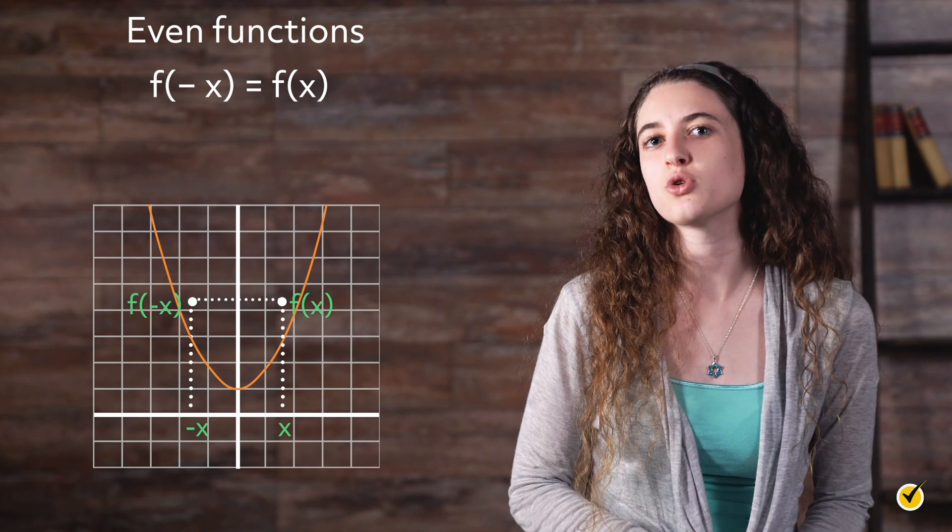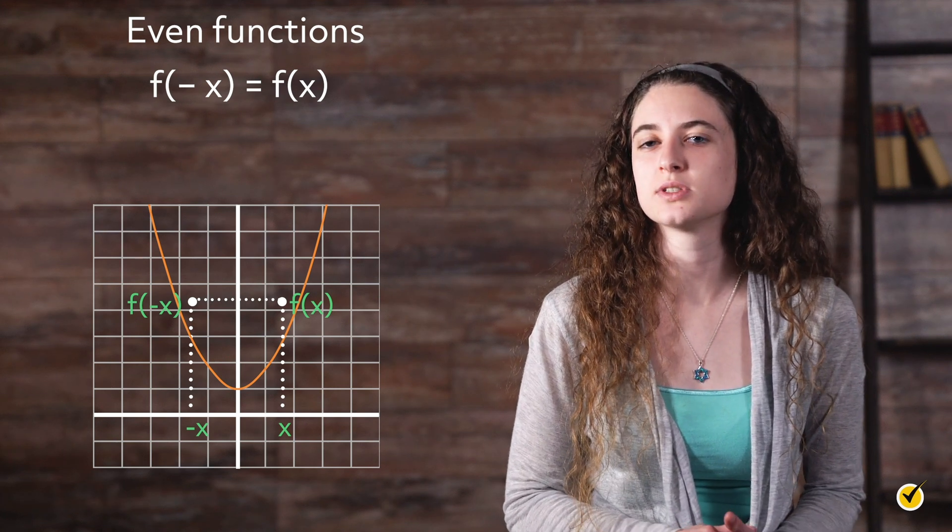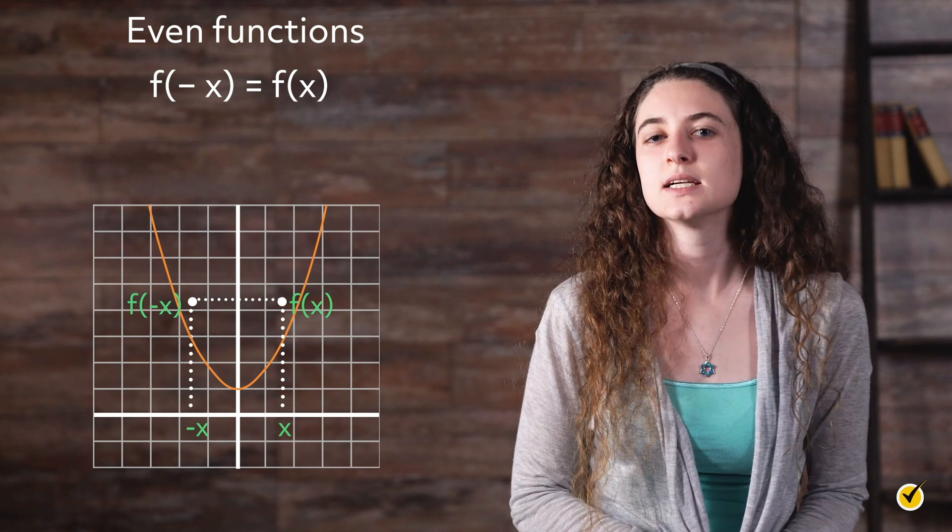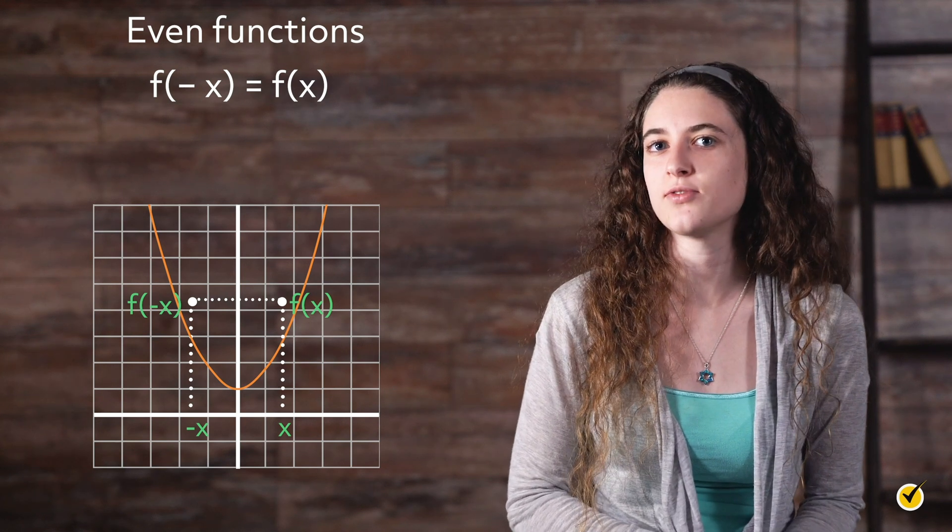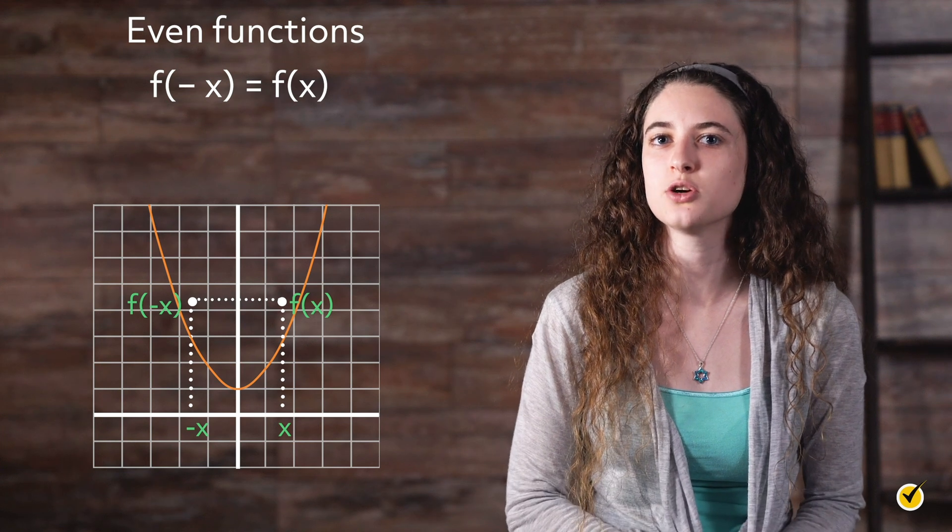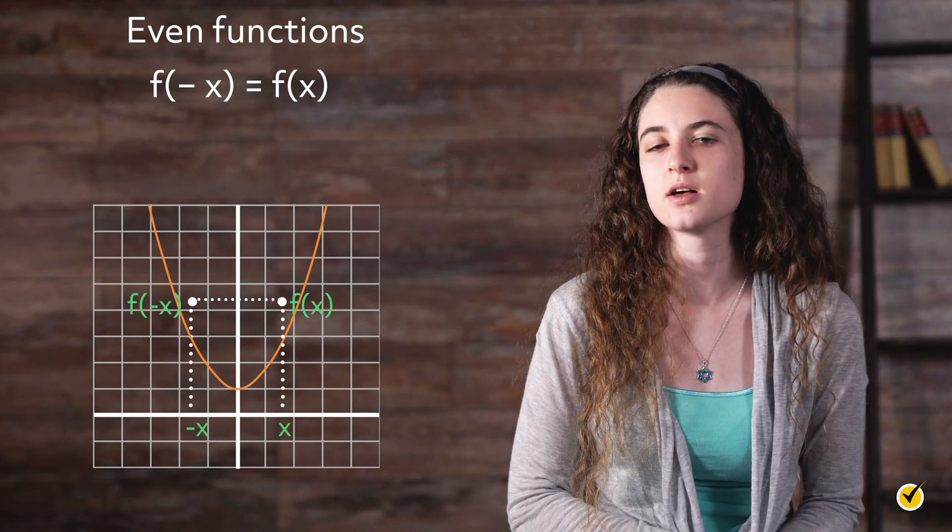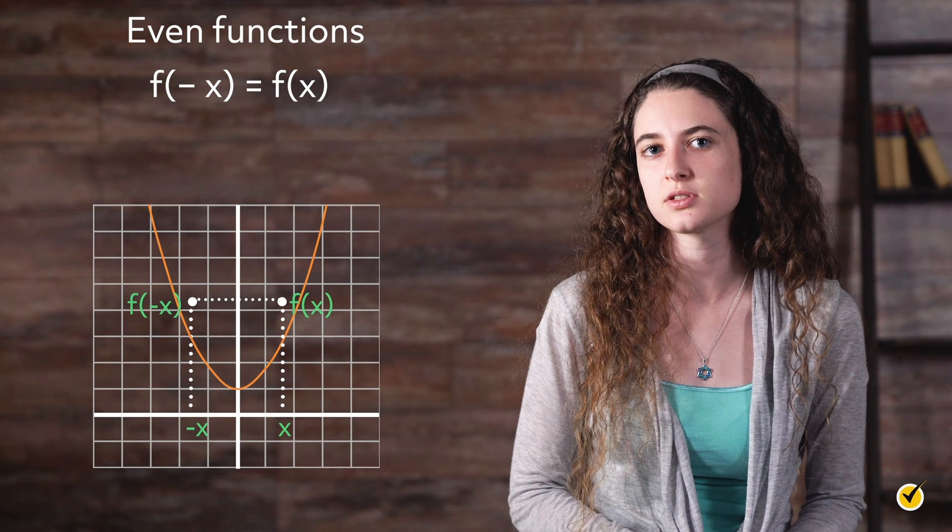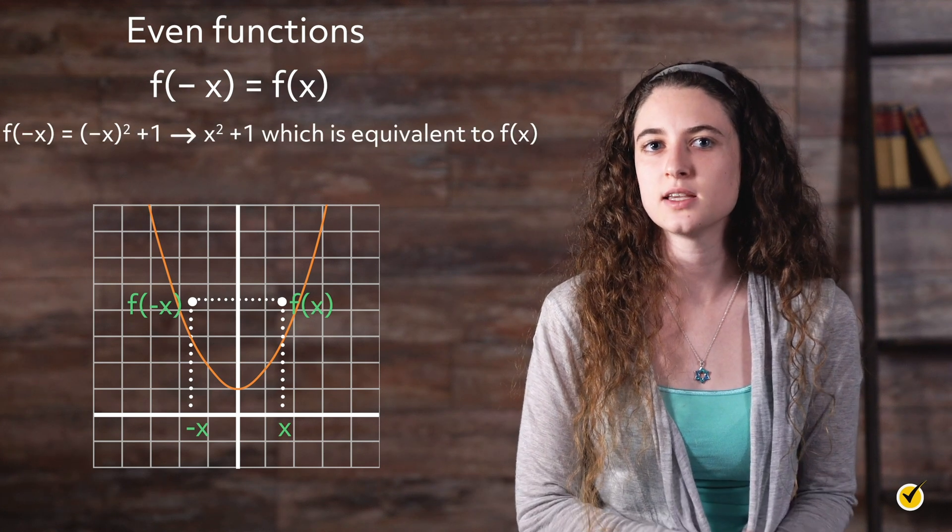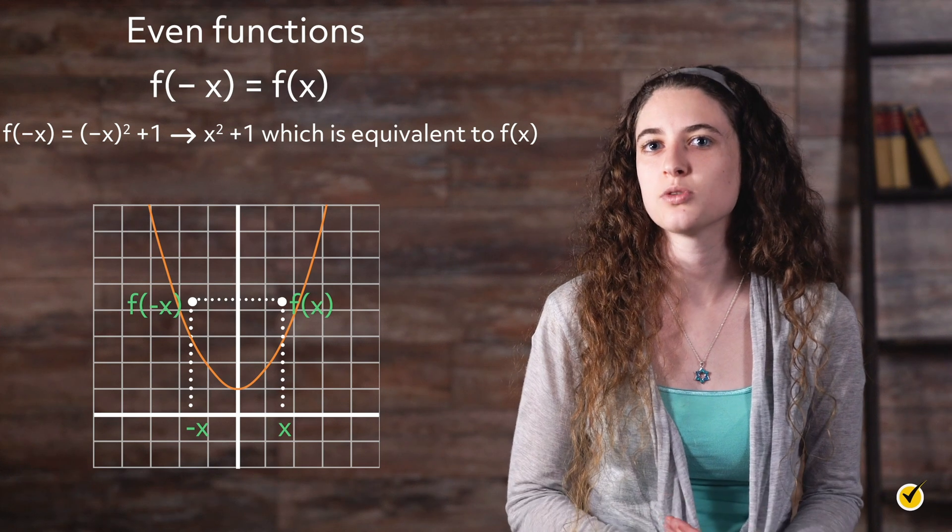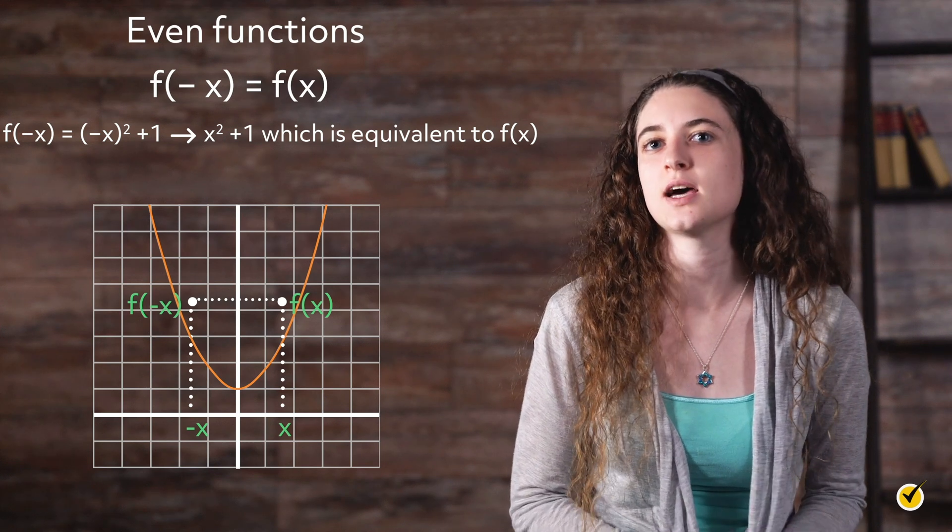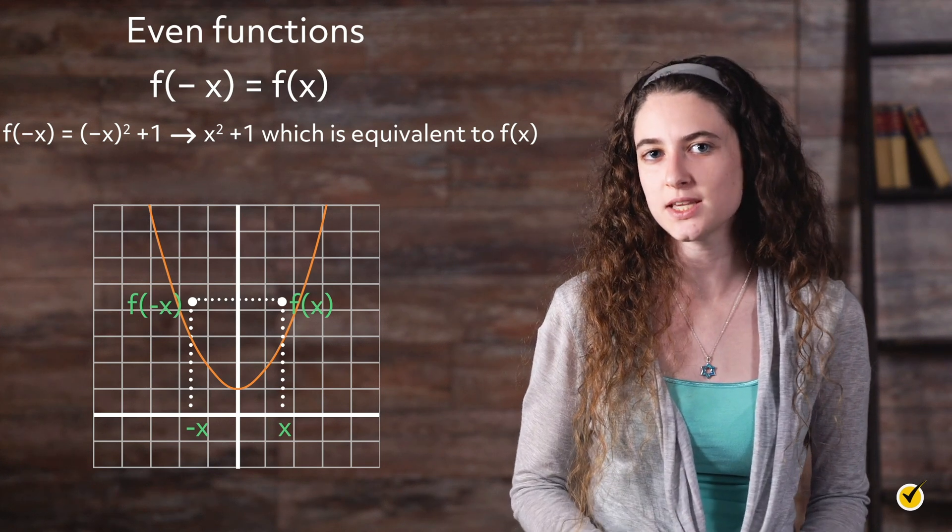For example, suppose you have a quadratic function f of x equals x squared plus 1. To test whether this function is even, simply substitute a negative x value and determine whether it is equal to the function evaluated at the positive x value, as follows. f of negative x equals negative x squared plus 1, which is equal to x squared plus 1, which is equivalent to f of x. This function is even.